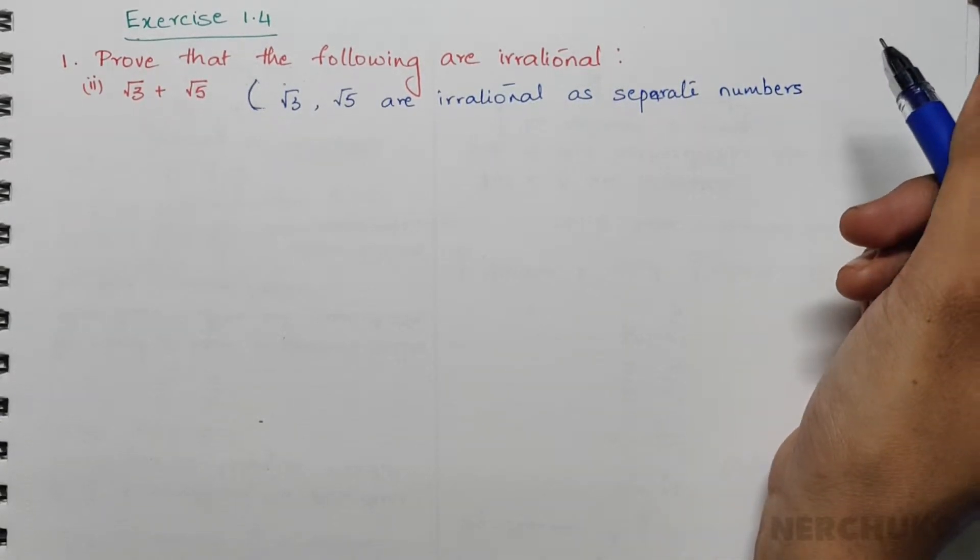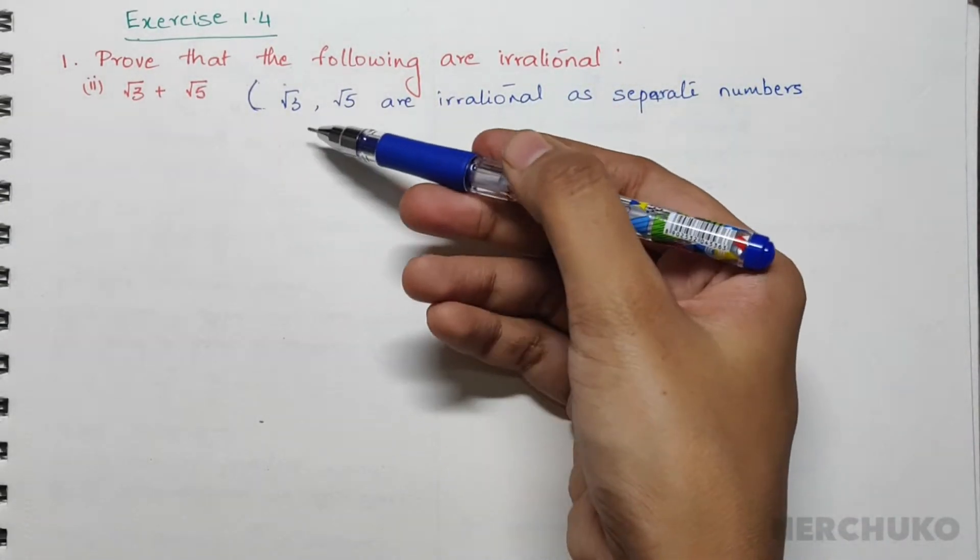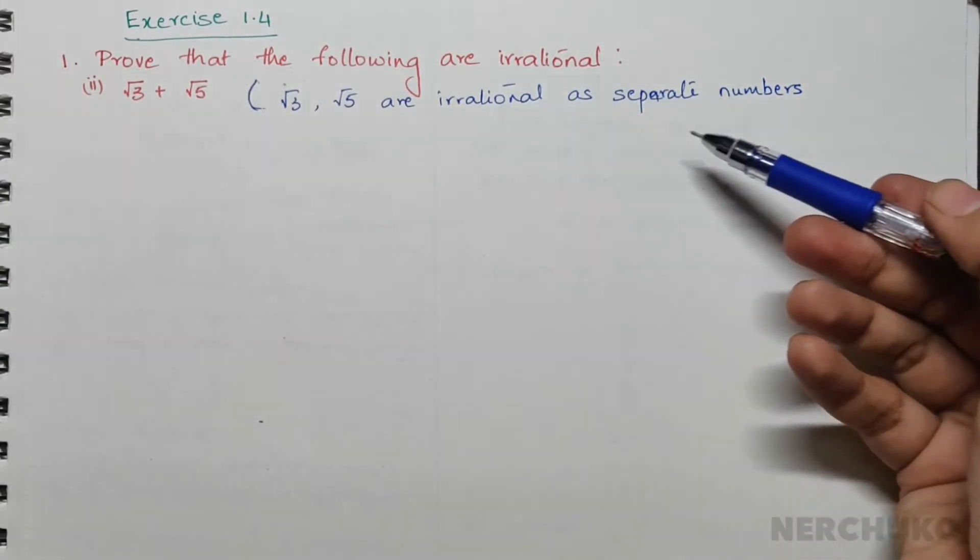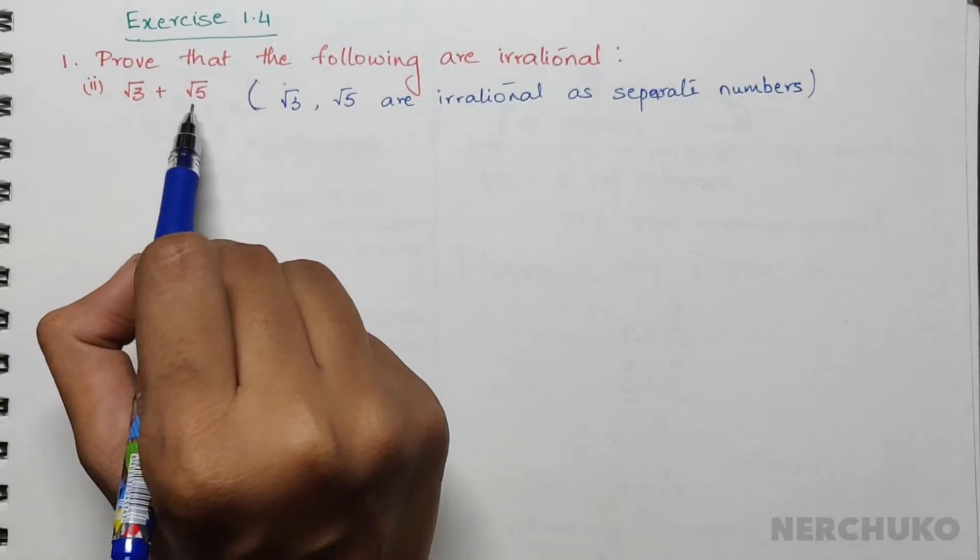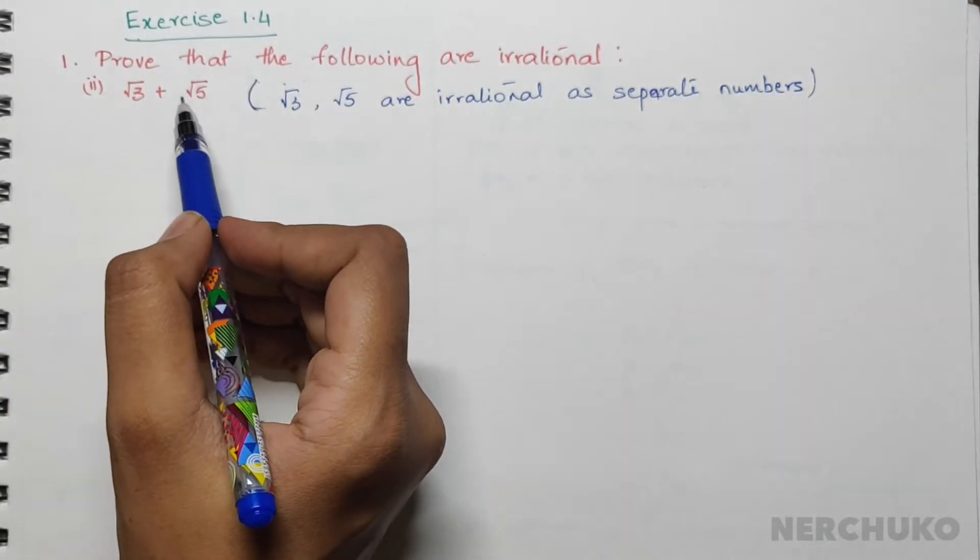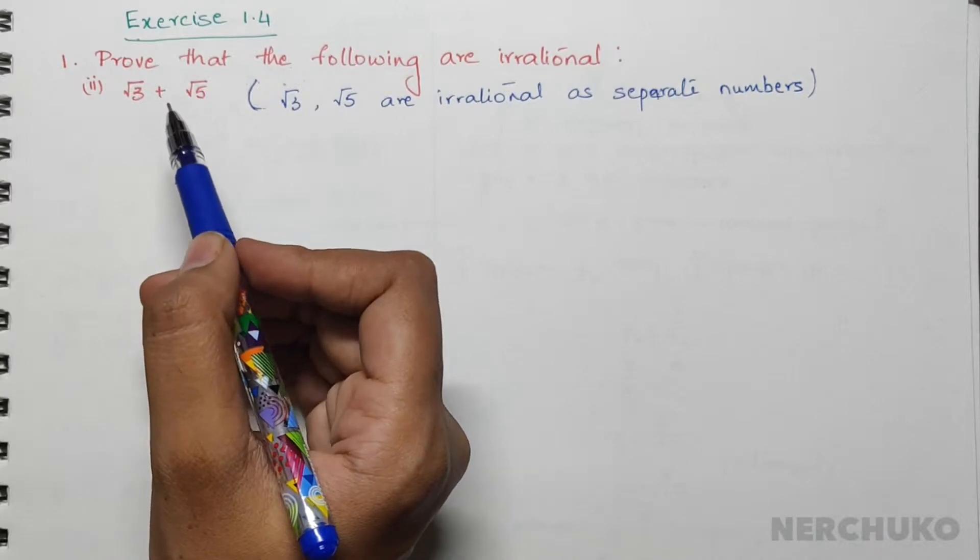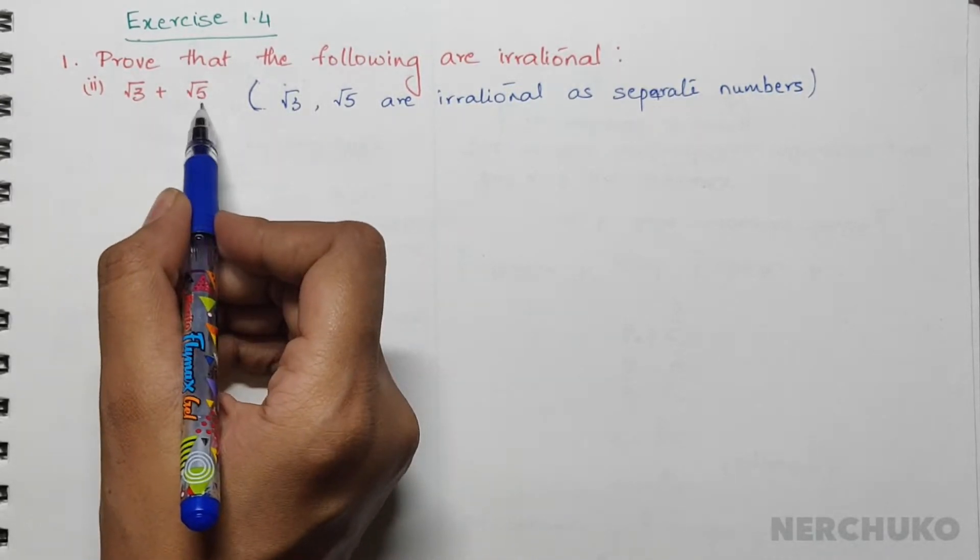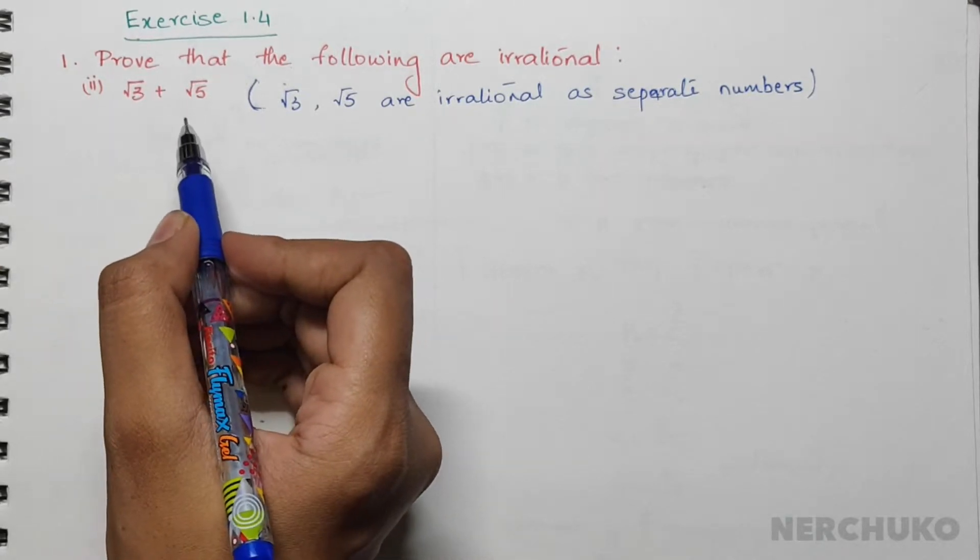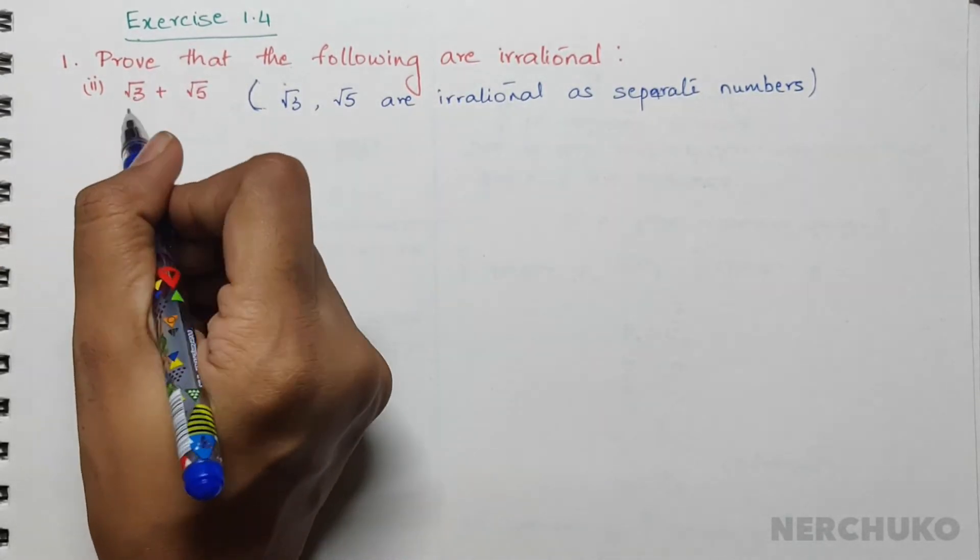Only after you know that √3 and √5 are irrational as separate numbers can you solve this problem. In the same way as we have done the first problem, let us assume that this expression is a rational number.